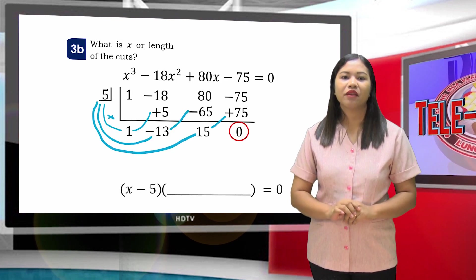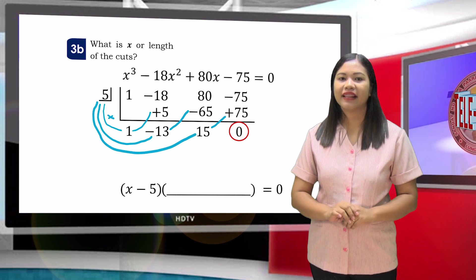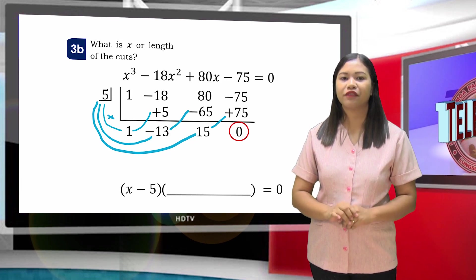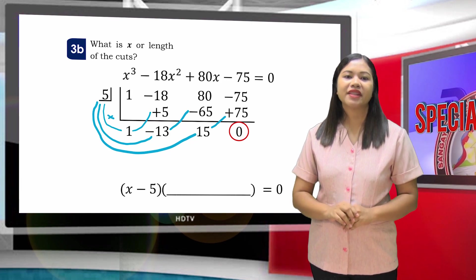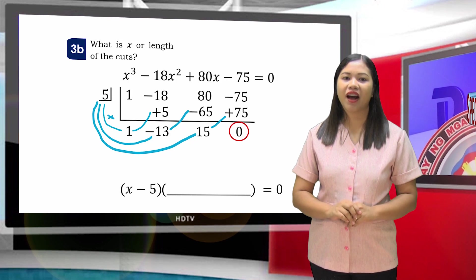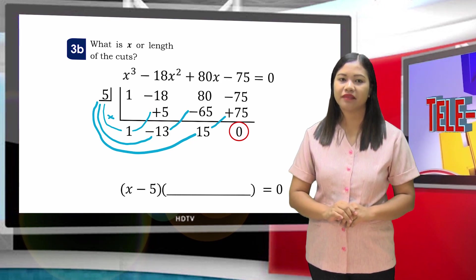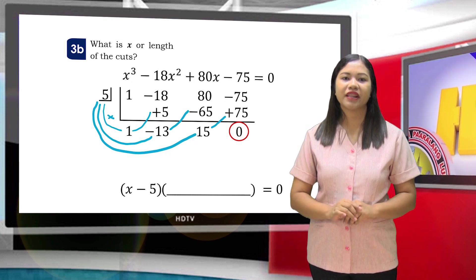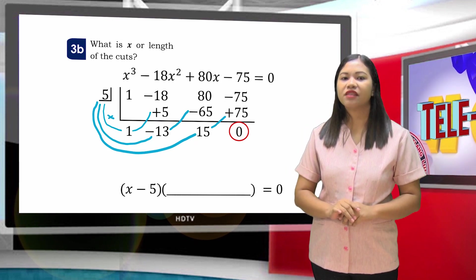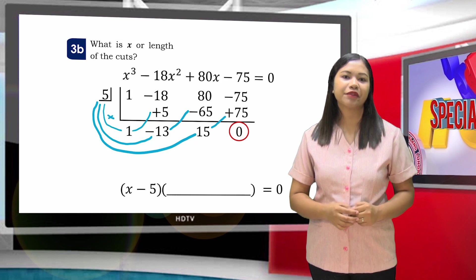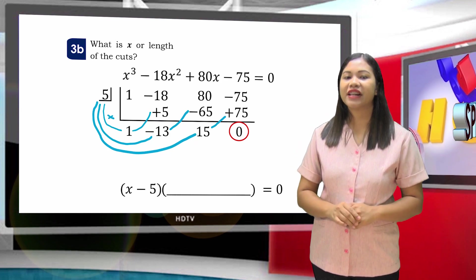Bring down 1. 5 times 1 is 5. Negative 18 plus 5 is negative 13. 5 times negative 13 is negative 65. 80 plus negative 65 is 15. 5 times 15 is 75, and negative 75 plus 75 is 0. Since the remainder is 0, then X - 5 is one of the factors of the given equation.